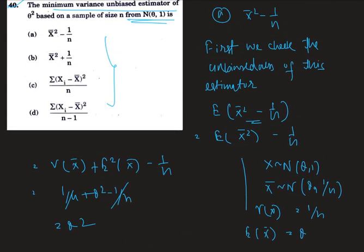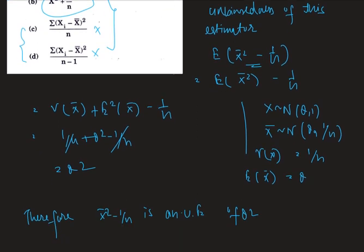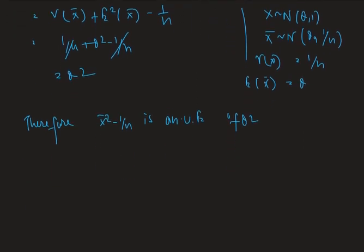It is pretty much obvious that option B cannot be correct. Options C and D are similar to unbiased estimators used to estimate variance, but here the variance is 1, so C and D are also not correct. Therefore, option A is the correct option.